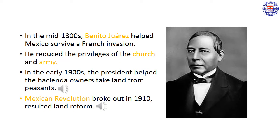In the mid-1800s, Mexico faced other challenges. During this time, the popular president Benito Juarez helped Mexico survive a French invasion. He also made reforms that reduced the privileges of the church and the army. In spite of these reforms, in the early 1900s the president helped hacienda owners take land from peasants. Also, foreign companies owned huge amounts of land in Mexico and, in turn, influenced Mexican politics. Many Mexicans thought the president gave these large landowners too many privileges. As a result, the Mexican Revolution broke out in 1910.